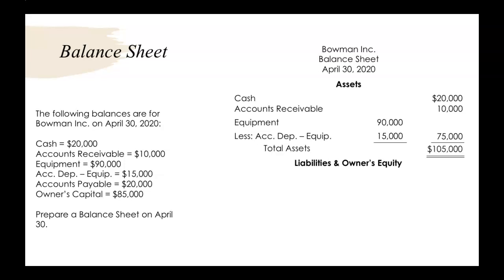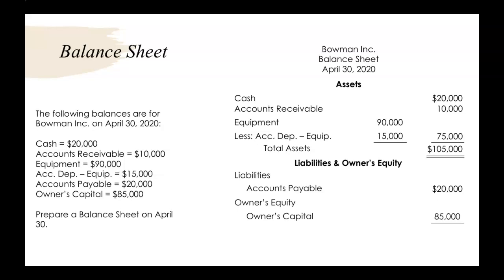So if we take $20,000 plus $10,000 plus $75,000, we find our total assets to be $105,000. Now we move on to the liabilities and owner's equity section. We only have one liability: accounts payable, $20,000. Then we list out our owner's equity account — owner's capital — which is $85,000. Our total liabilities and owner's equity adds up to $105,000. So our assets do equal our liabilities plus owner's equity.